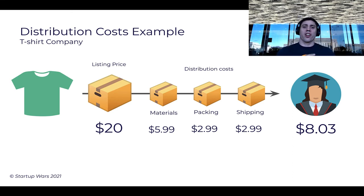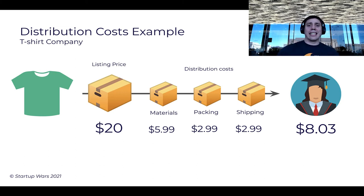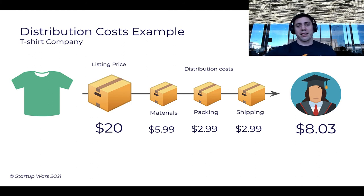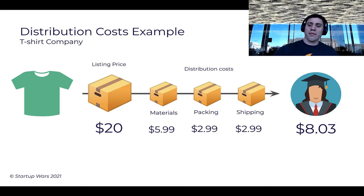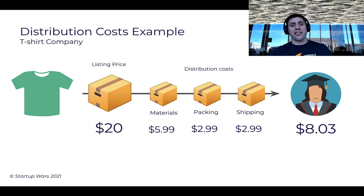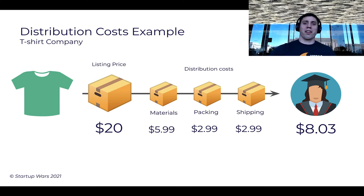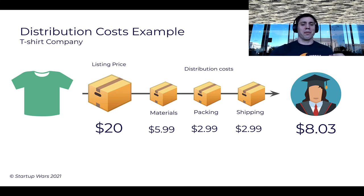That $8 and three cents is your profit after the distribution costs are taken out. Distribution costs are all the costs that go into actually taking your product and getting it to your consumer — to distribute the actual product. Now you might say to yourself, okay, $8 per t-shirt — that's still amazing. I have an $8 profit margin. I'm going to go to market, sell a bunch of them, and make $8 per t-shirt.